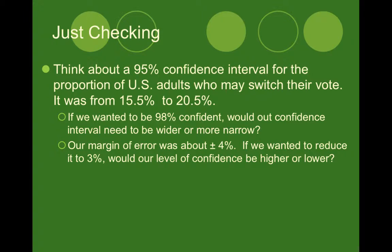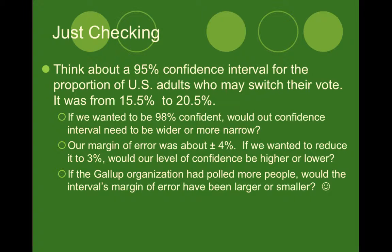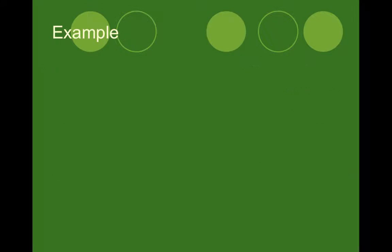Our margin of error was about 4%. If we wanted to reduce it to 3%, would our level of confidence be higher or lower? If we are making our margin of error smaller, we'll be making our interval more narrow and more precise, and the more precise we are, the less certain we will become — so our confidence level would end up being lower. If the Gallup organization had polled more people so our sample size was larger, the margin of error would be smaller, because a larger sample size means your sample proportion is more accurate and closer to the true population proportion.